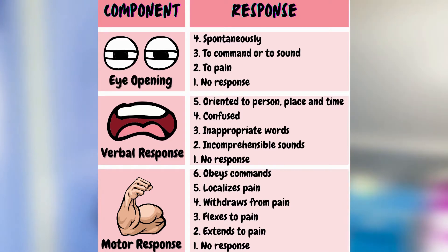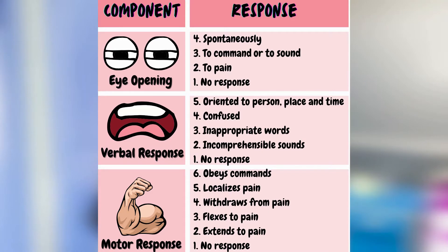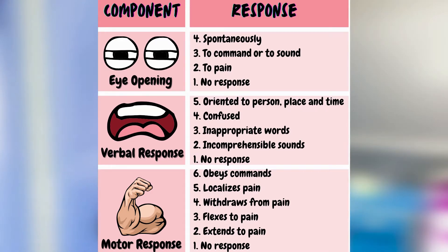The next component is the best motor response, graded from 1 to 6. 6 being the highest, meaning the patient can obey commands. 5 meaning the patient can localize pain. 4 meaning the patient can withdraw from pain. 3 meaning the patient flexes to pain stimuli. 2 meaning the patient extends to painful stimuli. And 1, the lowest, meaning the patient does not move regardless of the stimulation.